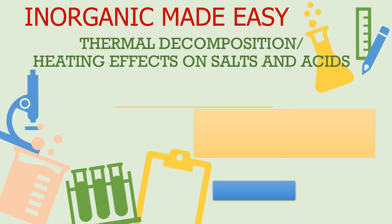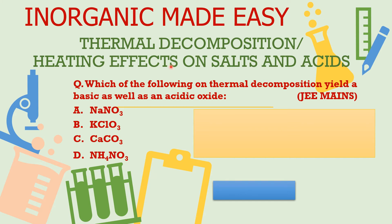But why are we learning this for JEE Mains and Advanced? Here is a question from the JEE Mains examination — in fact it is a 2012 AIEEE question. AIEEE is what it was called before JEE Mains. The question asks: which of the following on thermal decomposition yields a basic as well as an acidic oxide? You see four ionic compounds, and you need to know what products form when each is heated, and whether those products include acidic and basic oxides.